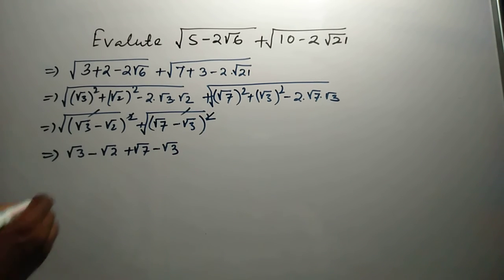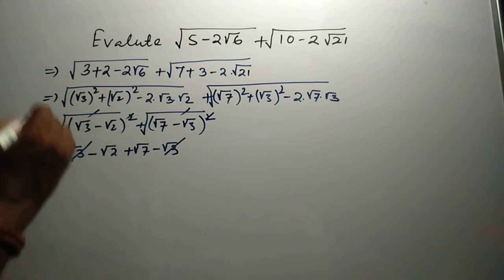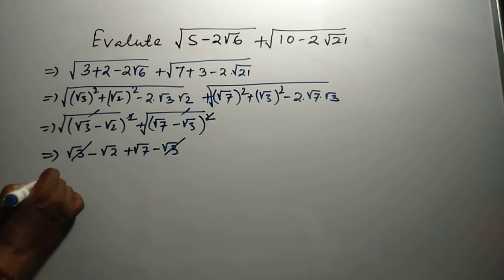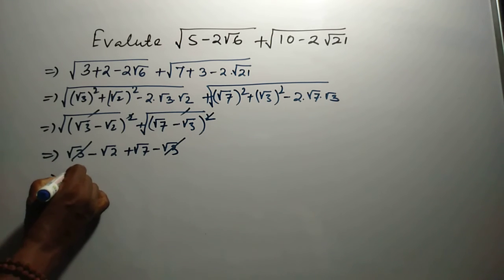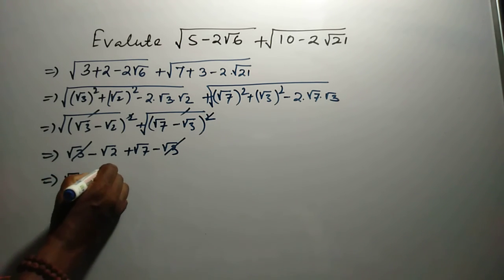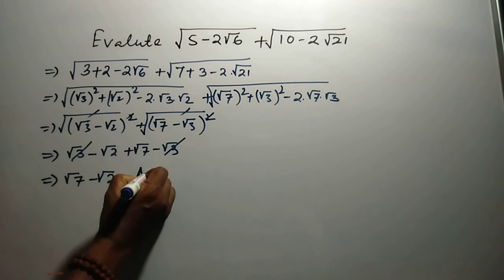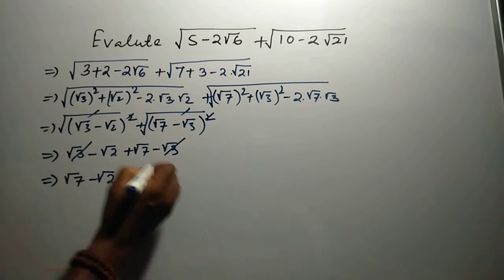Now +√3 and -√3 cancel, giving the final answer: √7 - √2.